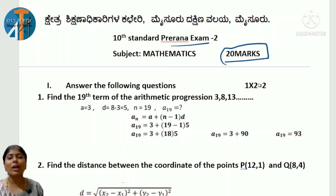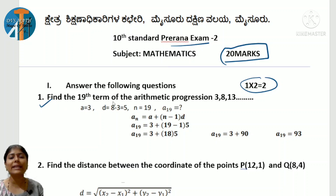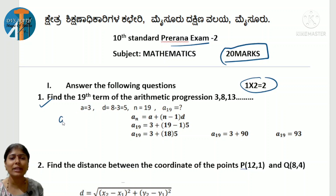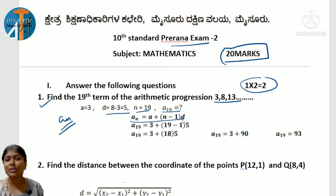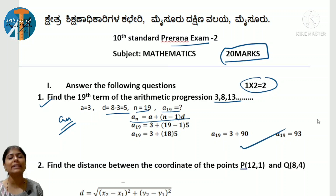The first section has one-mark questions — two questions are given. The first question: find the 19th term of an arithmetic progression 3, 8, 13, and so on. This formula is related to 'an'. Write the a value and d value, and set n=19. They are asking to find a19. The formula is: an = a + (n−1)d. So a19 = 3 + (19−1) × 5 = 3 + 18 × 5 = 3 + 90 = 93. This is about finding an using the an formula.